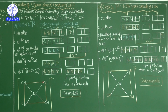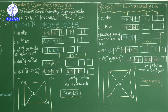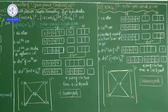Hence, square planar complexes are formed. The net charge is 2 minus. There is no unpaired electron in these complexes — all are completely paired. That is why tetracyano nicelate 2 ion is a diamagnetic complex.